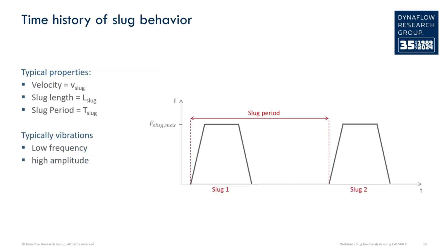A process department can often use software tools to compute the slug velocity, density, and length. This can then be used as an input in the static and dynamic analysis of a piping system.